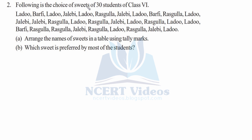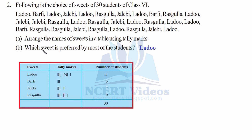Question 2: The following is the choice of sweets of 30 students of class six. Part A: arrange the names of sweets in a table using tally marks. Part B: which sweet is preferred by most of the students? We will make a table with columns: sweets, tally marks, and number of students.